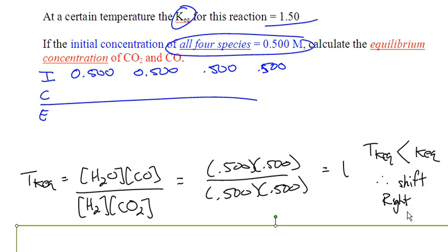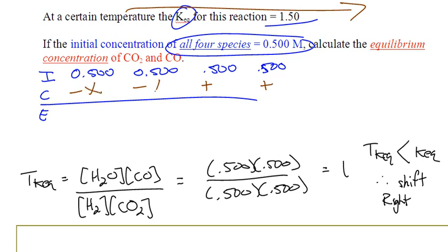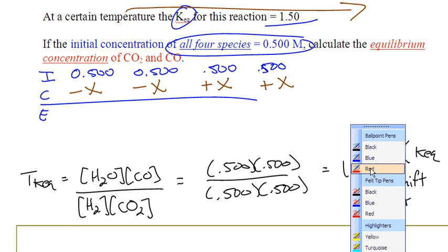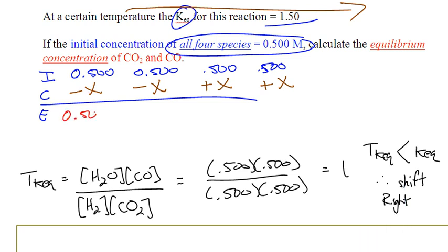Make a note that it's shifting right. The reactants will decrease in value and the products are going to increase in value — they'll change by the value of x. We don't know the change; we have to solve for it. So reactants go down with a shift to the right and products go up. Our ICE table equilibrium row becomes: 0.500 − x, 0.500 − x, 0.500 + x, and 0.500 + x.